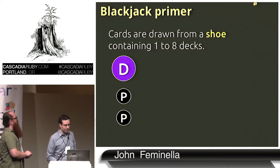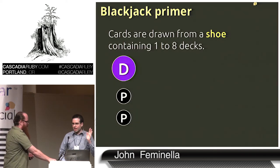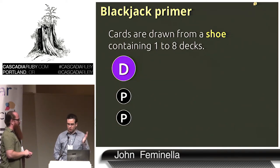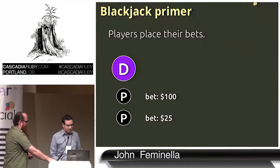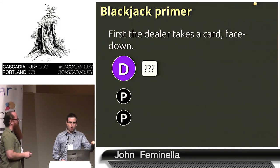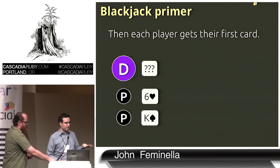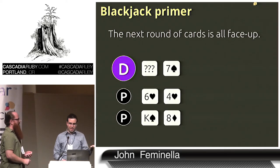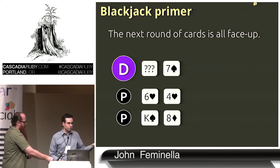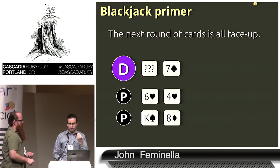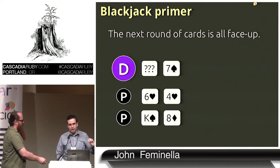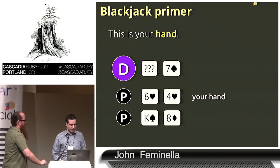Real quick blackjack tutorial: there's a dealer, a couple of players, the cards come from a shoe containing one to eight decks. Players place their bets at the start of each hand. The dealer takes a card face down. All the players get their cards face up. The dealer's second card is face up as are all the other players' cards. So it's total information from all the players, and the only hidden variable is what are the remaining cards in the shoe and what does the dealer have face down.